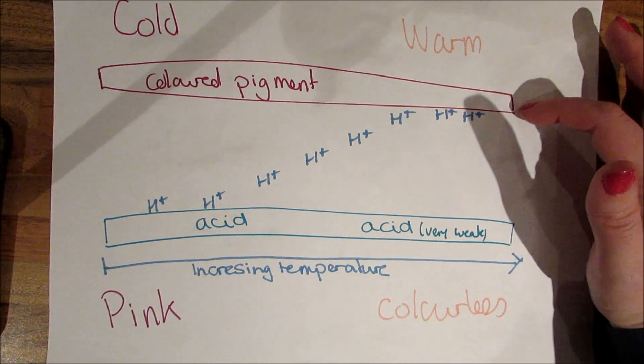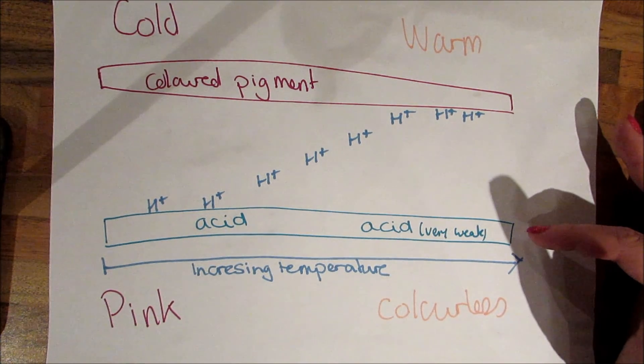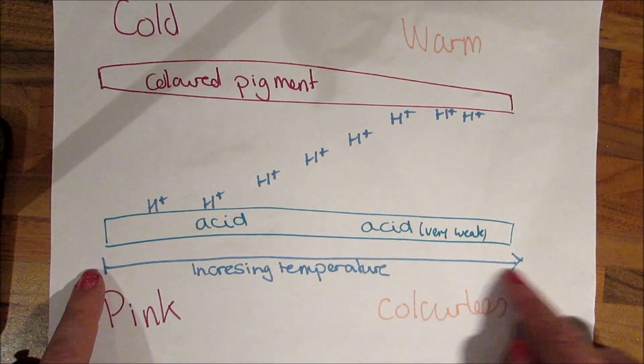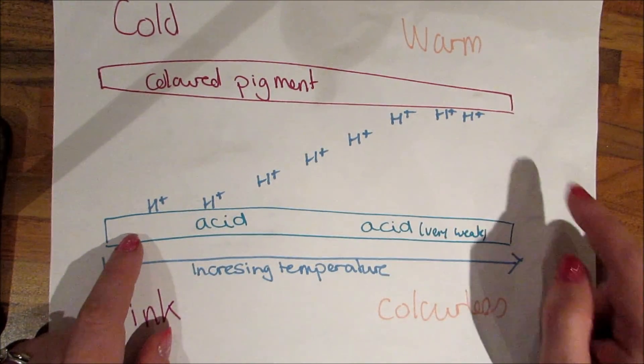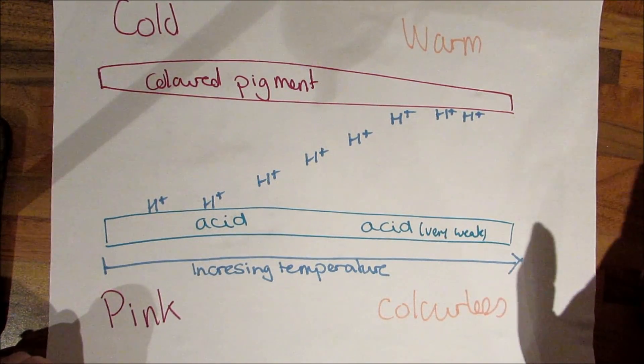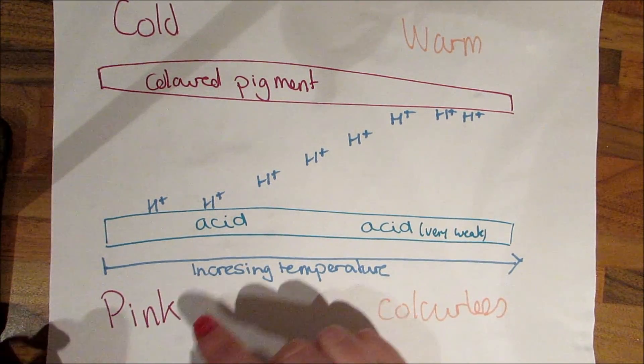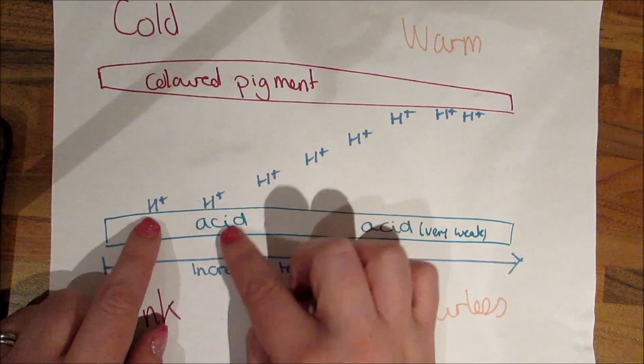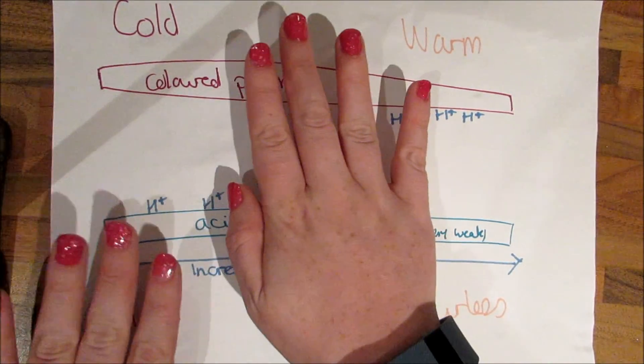You've got your colored pigment and a very, very weak acid. It's not going to hurt you; you won't even notice it's there. As the temperature increases, something happens to what we call hydrogen ions in the nail varnish. When it's cold, the hydrogen ions are attracted to acid, leaving the colored pigment free to be colored.